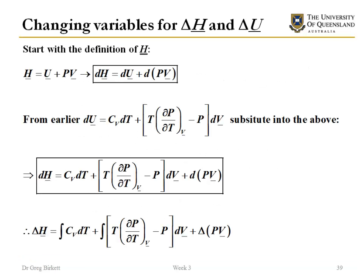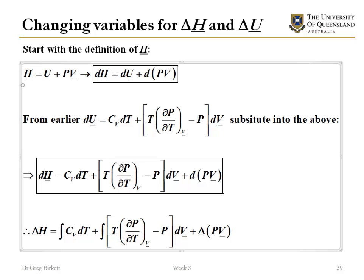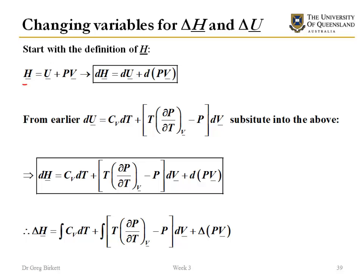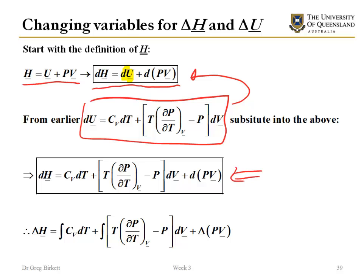To derive useful equations for enthalpy, we start with the definition of enthalpy that H is equal to U plus PV. In turn we can say if we need to know what dH is, we can just say dH is dU plus d(PV). We've already got an equation for dU and so we can substitute that directly into this equation above and we get this nice convenient equation for dH.